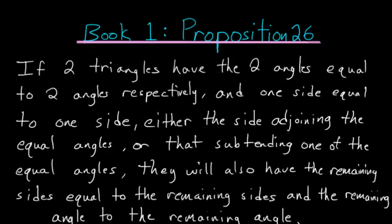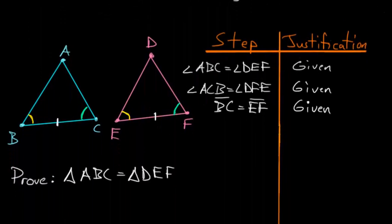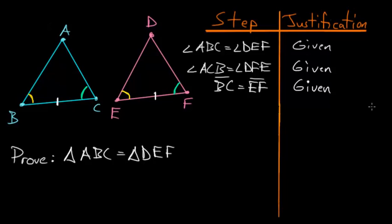For Book 1, Proposition 26 of Euclid's Elements: if two triangles have two angles equal to two angles respectively, and one side equal to one side — either the side adjoining the equal angles or that subtending one of the equal angles — they will also have the remaining sides equal to the remaining sides and the remaining angle equal to the remaining angle.